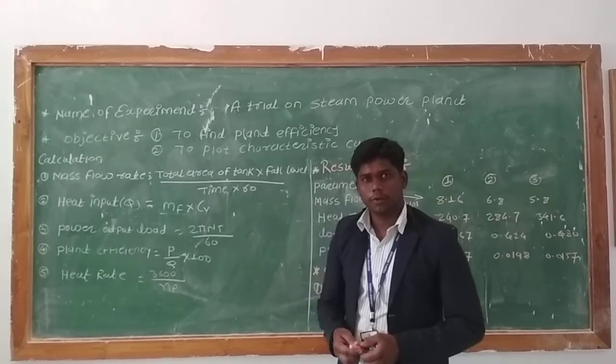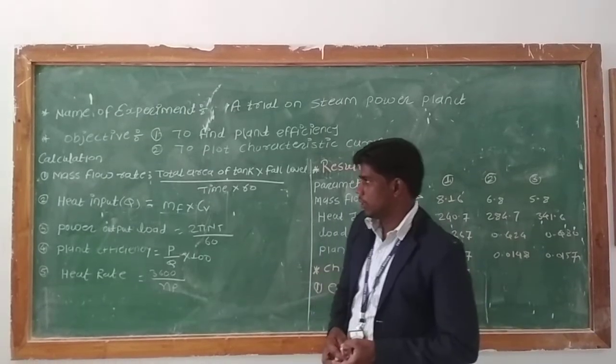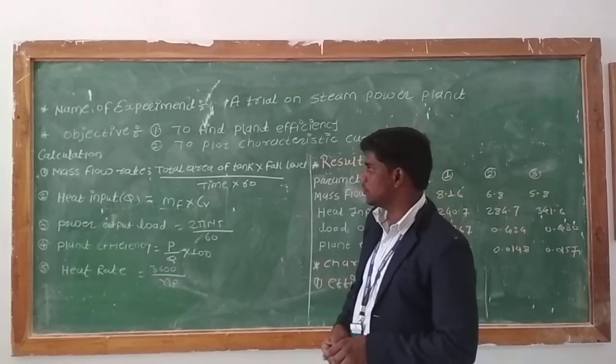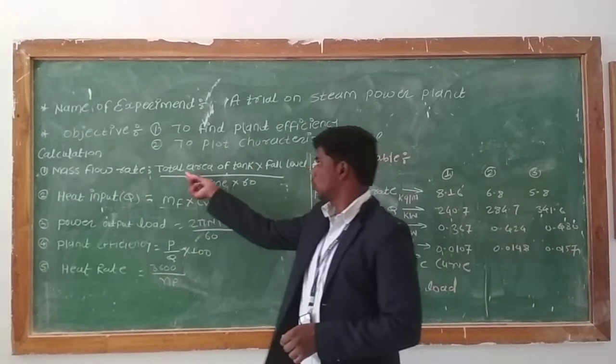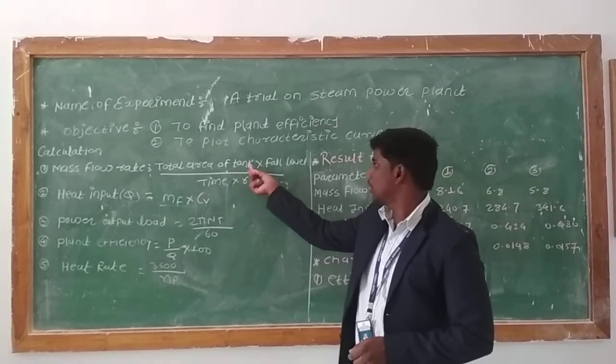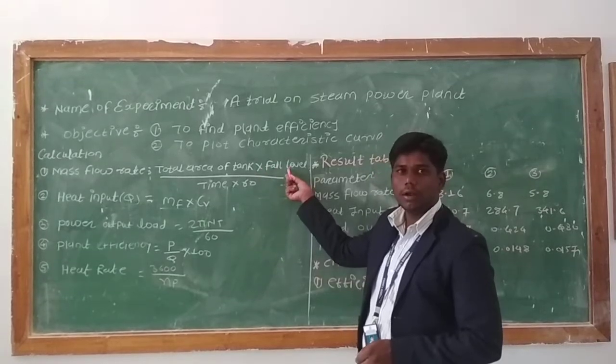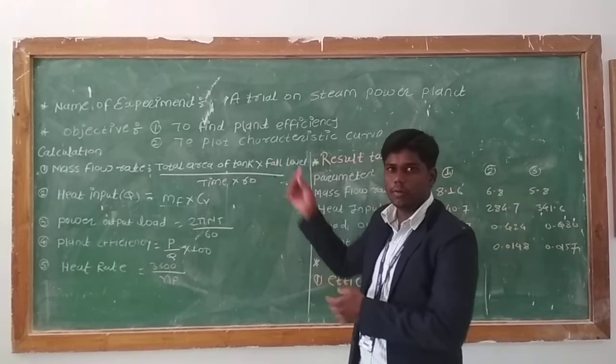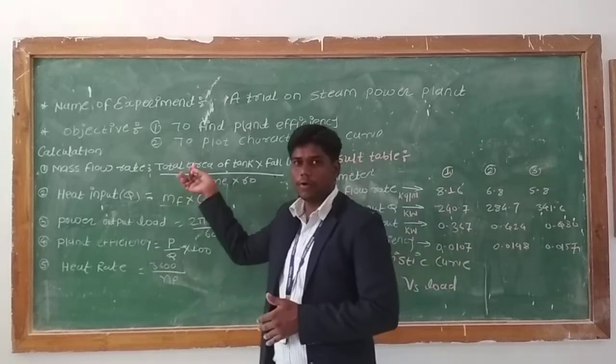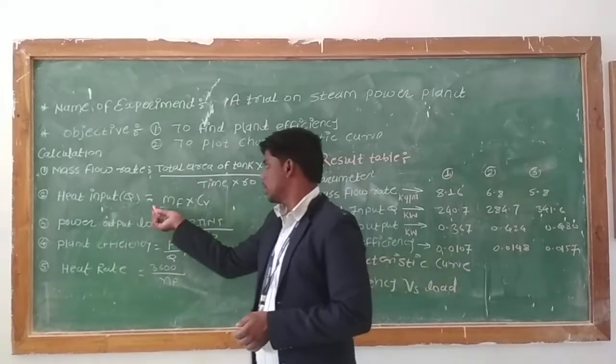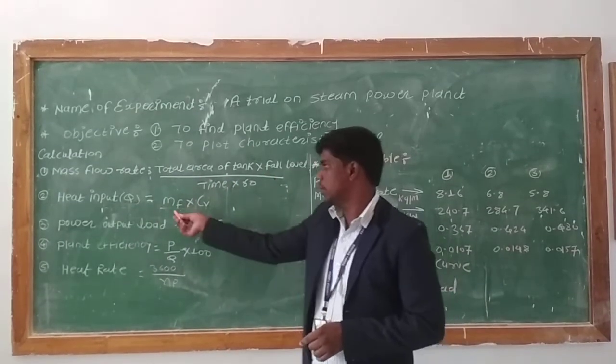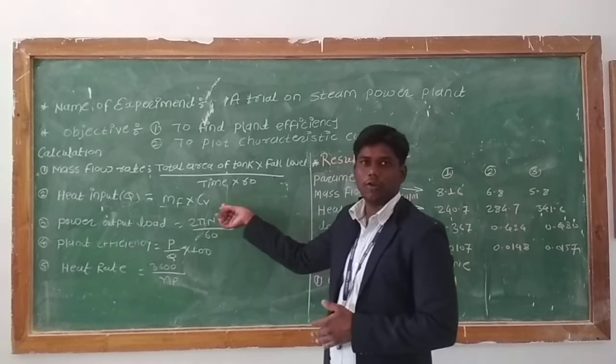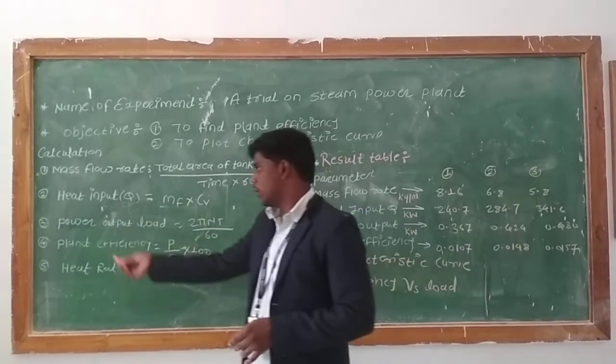From the observation we calculate first the mass flow rate. The formula is: total area of fuel tank times fall level of fuel divided by time times 60. Second is heat input: mf times cv, mass flow times calorific value.